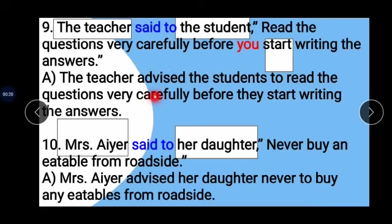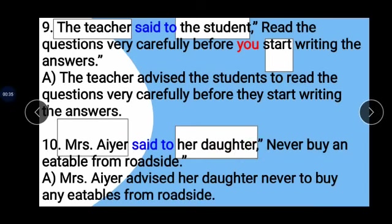Example 10: 'Mrs. Iyer said to her daughter: Never buy an eatable from the roadside.' Mrs. Iyer is our subject, her daughter is our object. 'Said to' changes to 'advised'. Answer: Mrs. Iyer advised her daughter never to buy an eatable from the roadside.